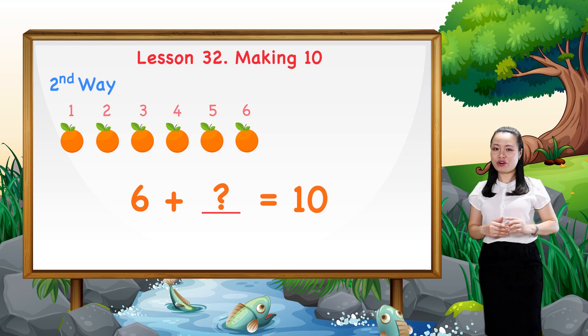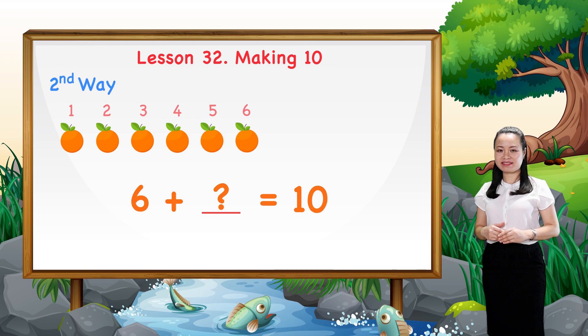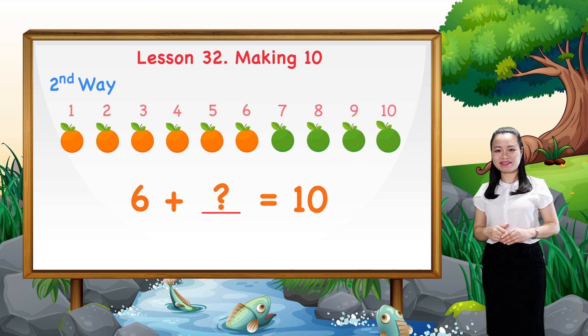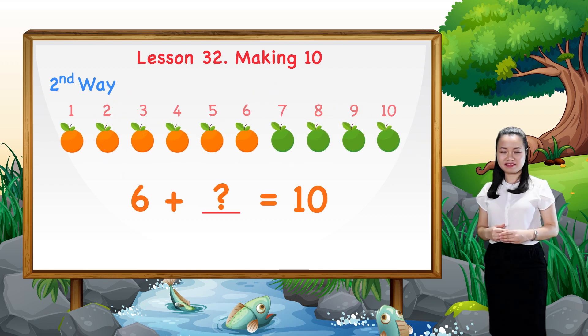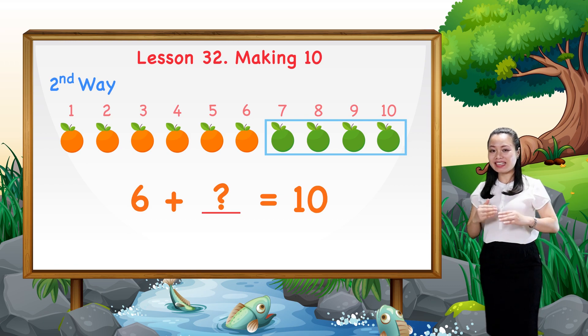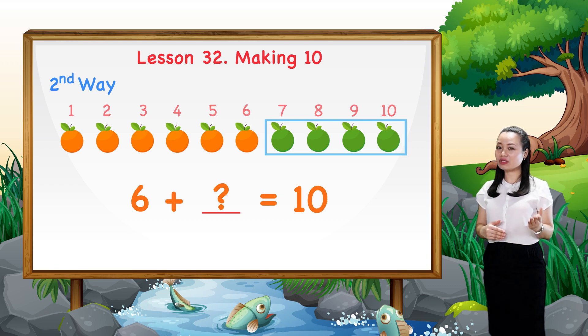Let's draw and count on seven, eight, nine, ten. Now, we have ten oranges. As you see, we've just drawn four more oranges which we need to have a total of ten.